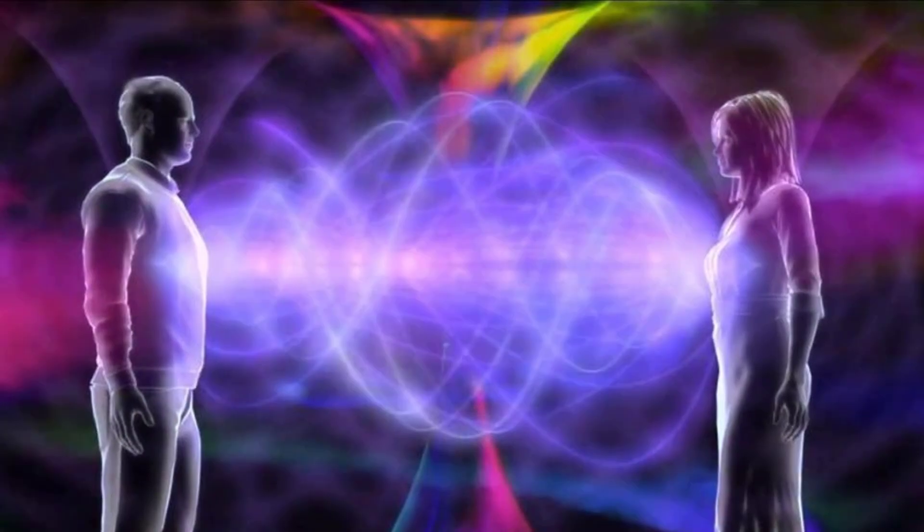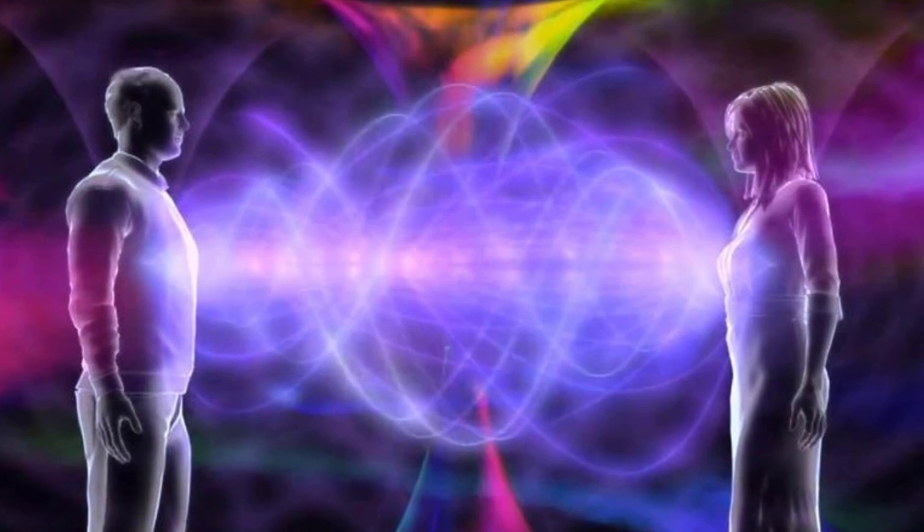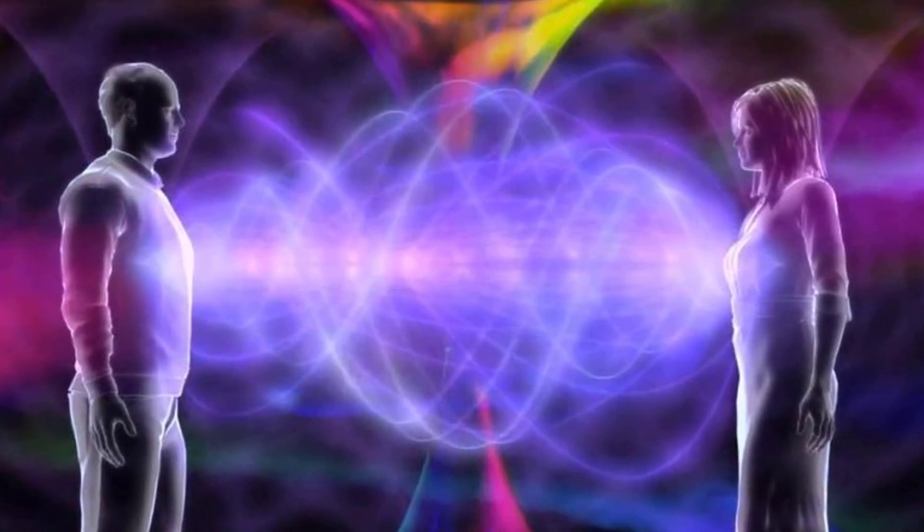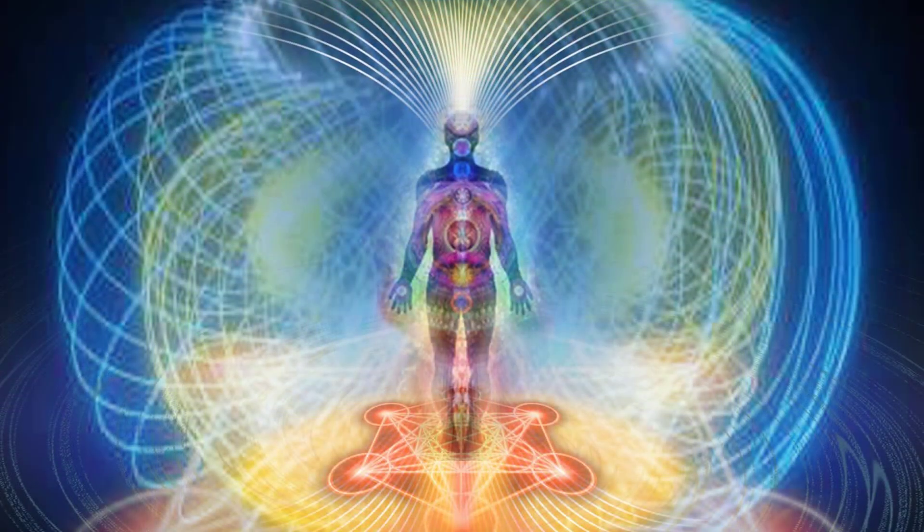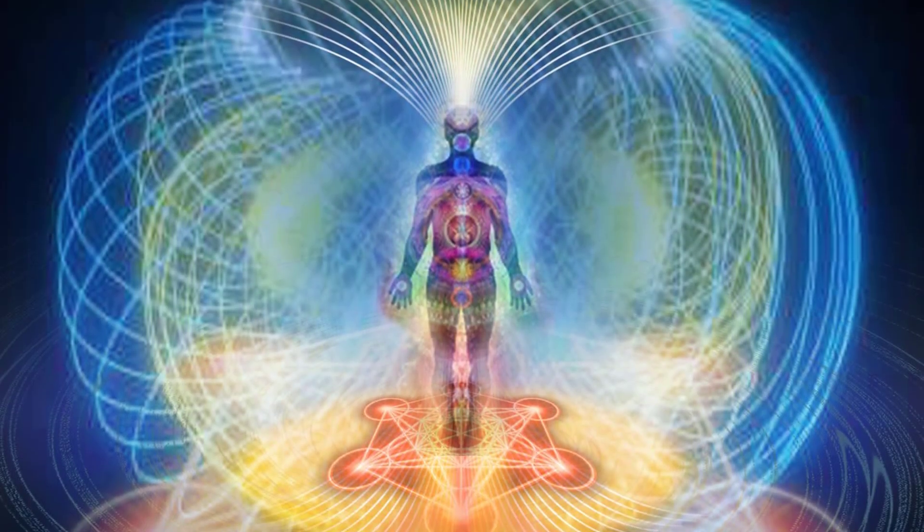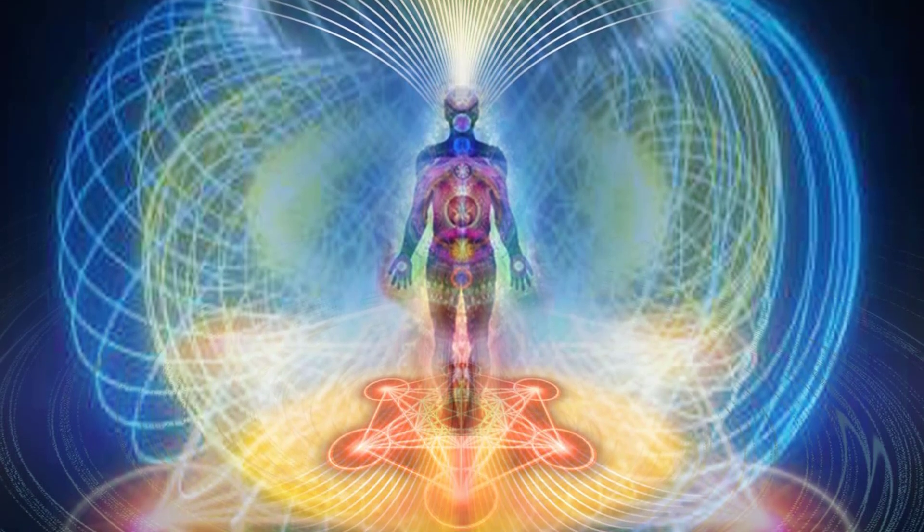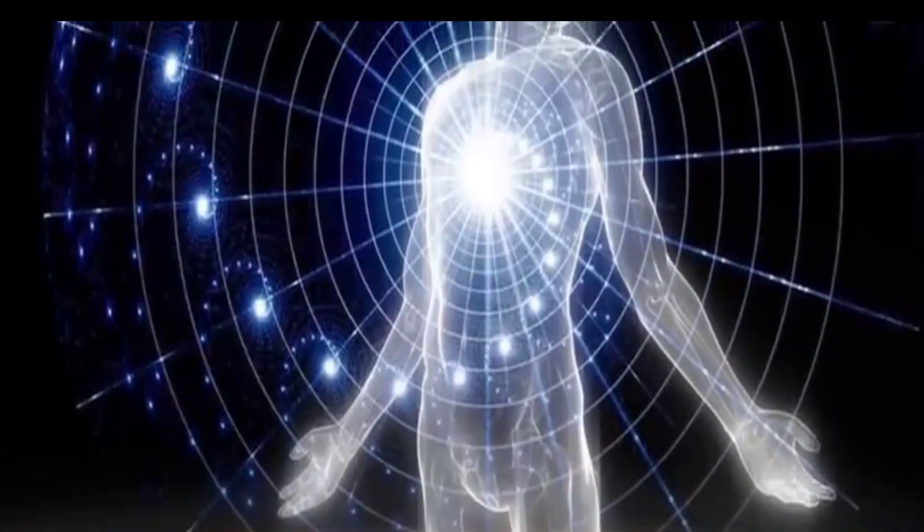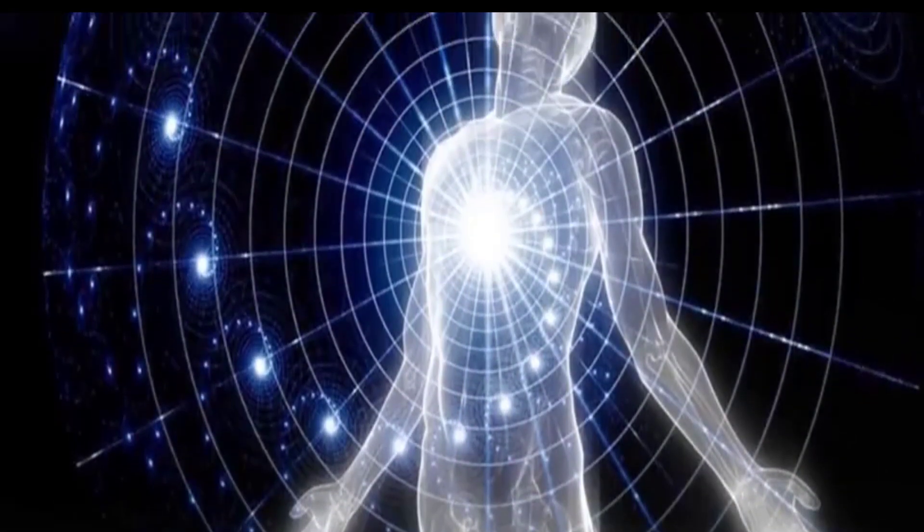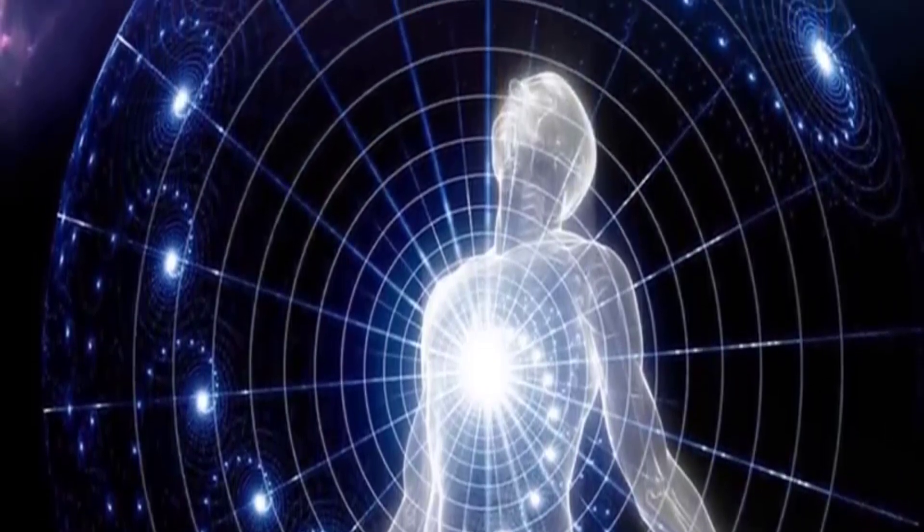This biological electromagnetic field generator allows us to understand each other at the emotional level and beyond, giving us a sense of connection to all things. This emotional connection is what creates bonding between individuals. For these reasons, the human heart holds the key to uniting humanity. When we learn how to think with our heart, it becomes easier for us to understand others, and thus achieving world peace will be a lot easier.